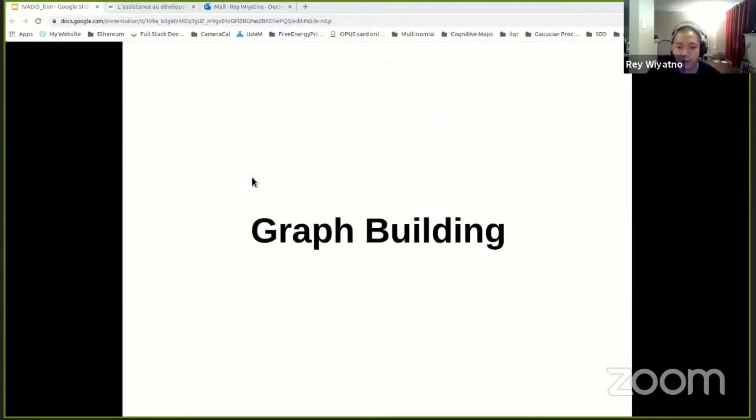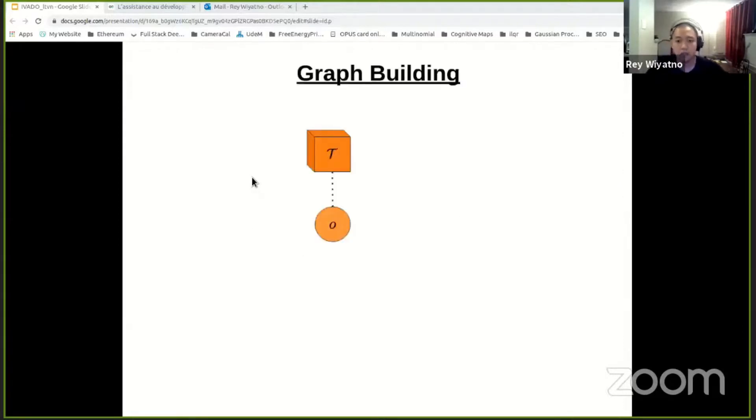So now that we understand the framework and what our model does, let's see how we can actually build topological graph using this model. So we first initialize the graph with a node randomly sampled from the trajectory images tau. And at each iteration, we sample a random node O_RAN, and then we use our model F to determine if O_RAN can be connected or merged with any of the existing nodes in the graph.